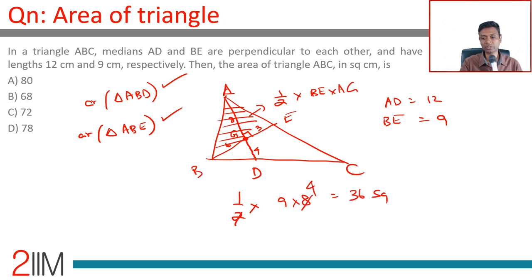That is going to be equal to the area of triangle BEC because BE is the median. So the area of triangle ABC is 36 times 2, which is 72 square centimeters.